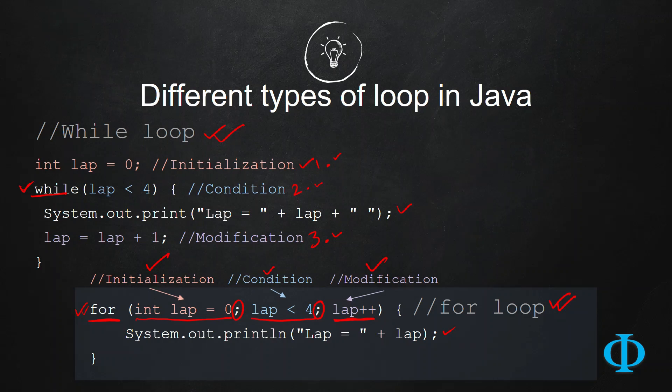...a more compact syntax by allowing you to write the initialization, condition, and modification all in the same line, for which you need three different lines in while loop. No other difference. Let us see an example of for loop in the next video.